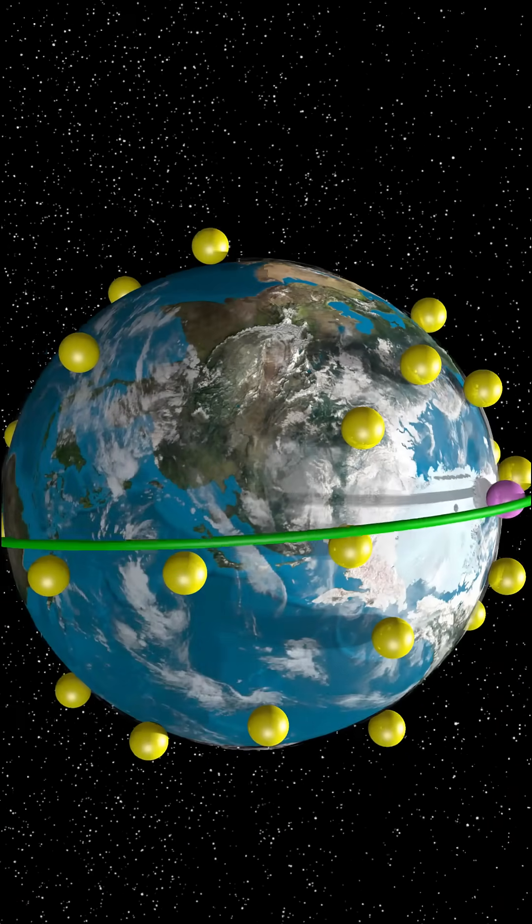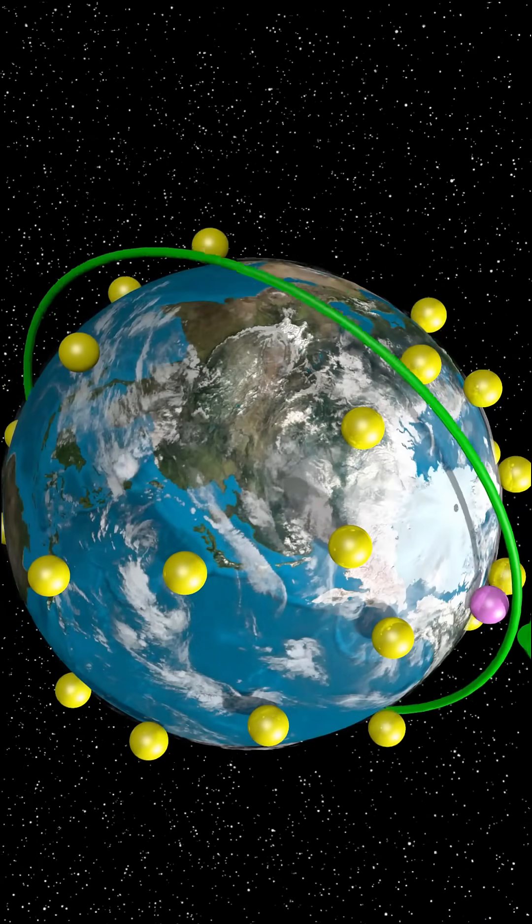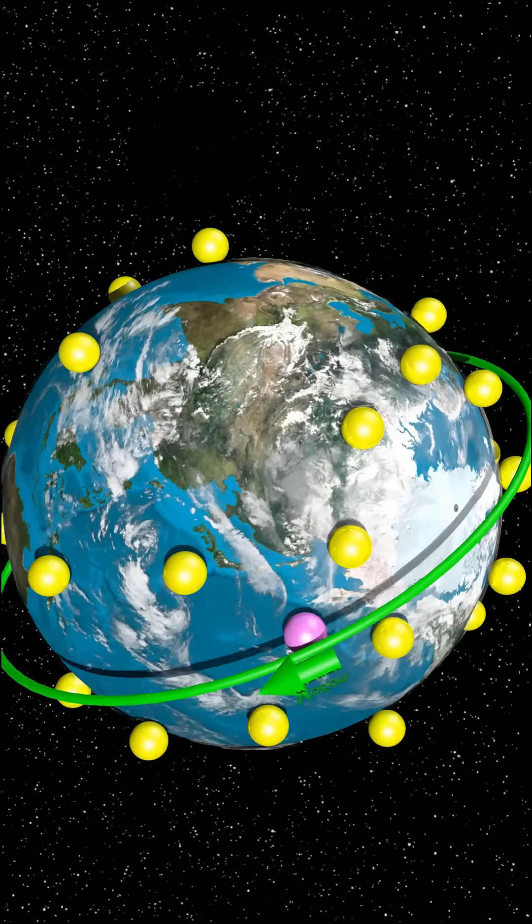Since the Earth is rotating relative to this path, the sphere's path will look like this to people on the ground.